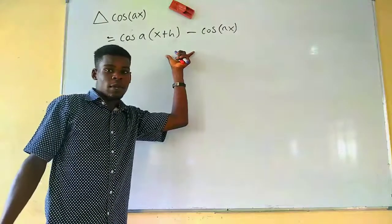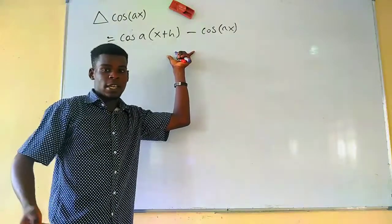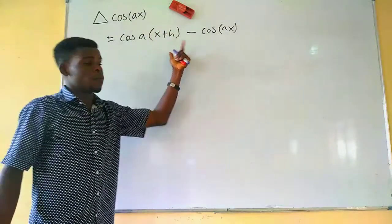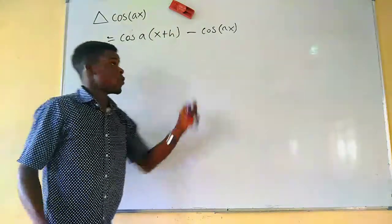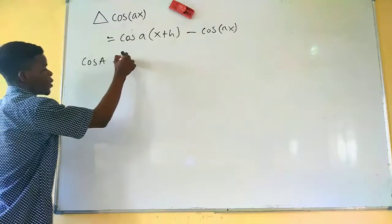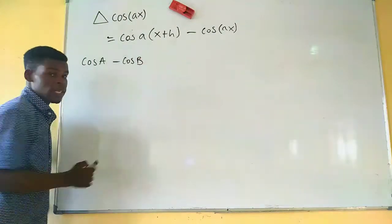Now, we're still going to make use of, like we did in the forward difference of sine function, we're still going to make use of the sum product identity, where we have that when we have cosine of an angle A minus cosine of another angle B.